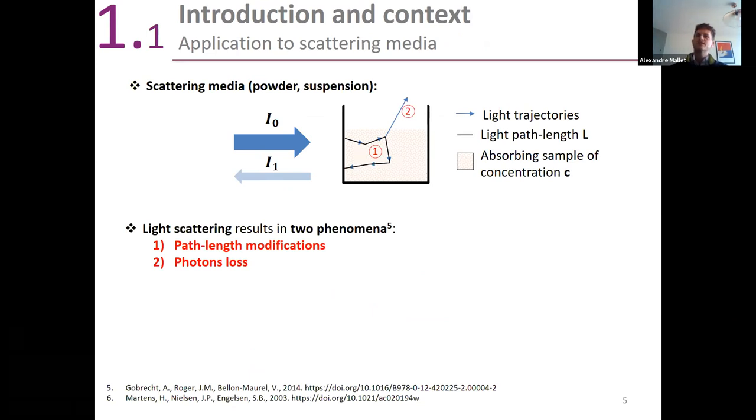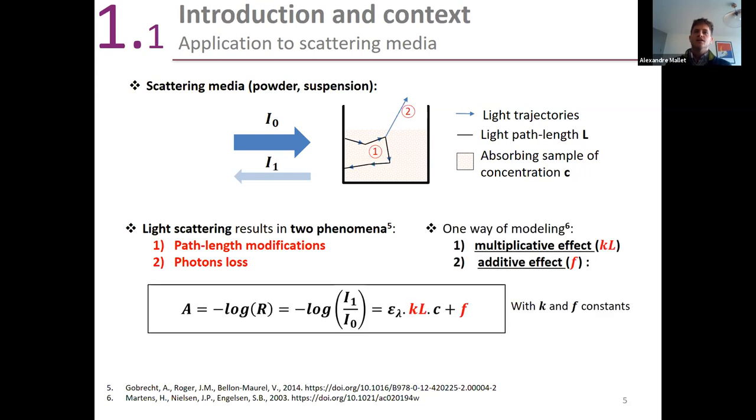In scattering media, we have two phenomena. We have the path length that is modified due to repetitive refraction events at the interfaces between particles, which lead to an increase or decrease of the path lengths. The second phenomena is that there are some photons that don't come back to the sensor, so it's a photon loss that we identify as an increase in absorbance, but it's just that the photons leave. One way of modeling is to say there's a multiplicative effect, k constant times the path length, and an additive effect noted as f. This is the basis of pre-treatments such as SNV or MSC where those effects are accounted for.